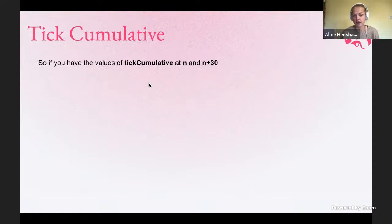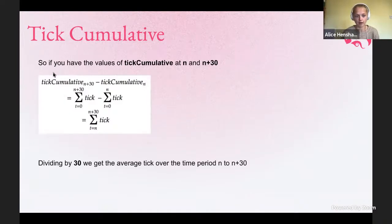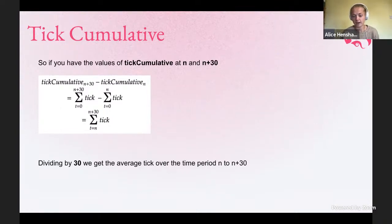So if you have the cumulative tick at point n and point n plus 30 — that's 30 seconds apart — you can get those two readings from the observations array: the tick cumulative now and the tick cumulative 30 seconds ago, and subtract one from the other. That works out to give you the sum of the ticks just between those two points in time. Dividing by the number of seconds that have passed gives you the average tick, or the average price for that period of time.